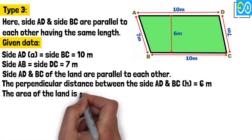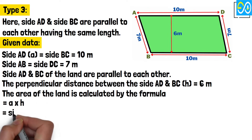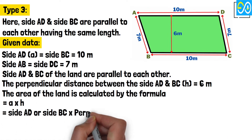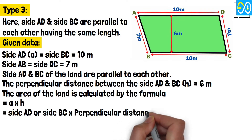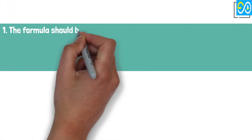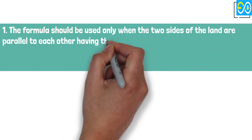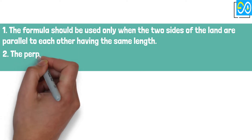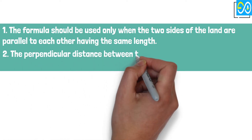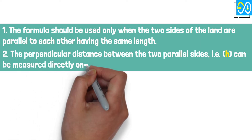The area of the land is calculated by the formula: equals A times H, equals side A, D or side B, C times perpendicular distance. Equals 10 times 6, equals 60 square meters. Note: 1. The formula should be used only when the two sides of the land are parallel to each other having the same length. 2. The perpendicular distance between the two parallel sides, that is H, can be measured directly on the plot if not known.